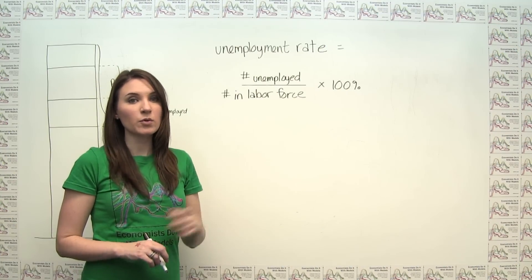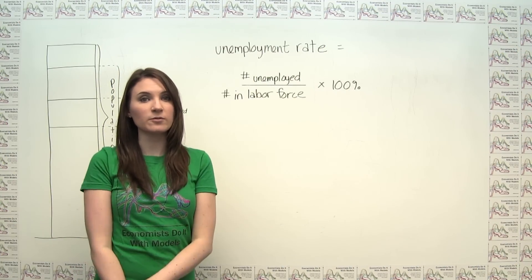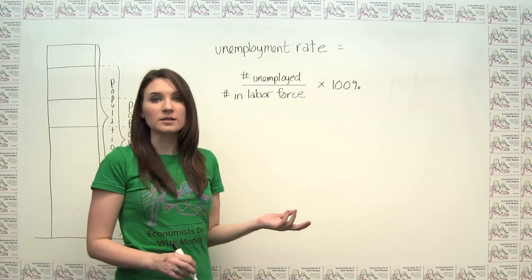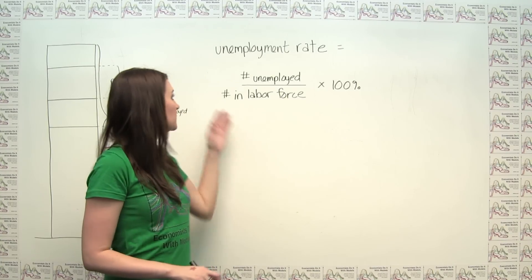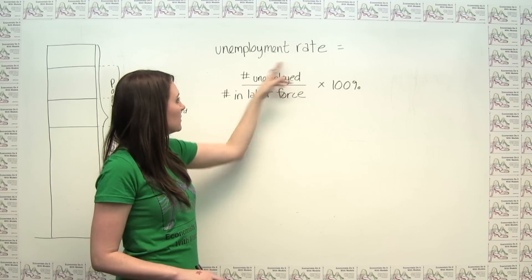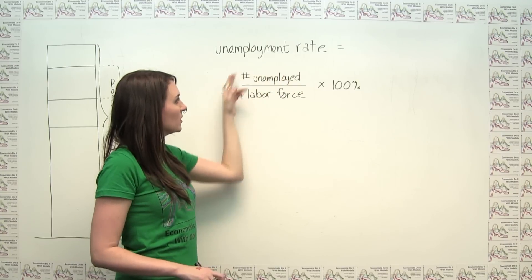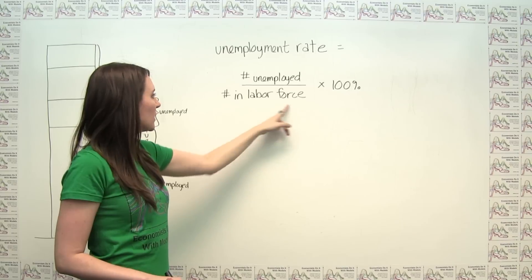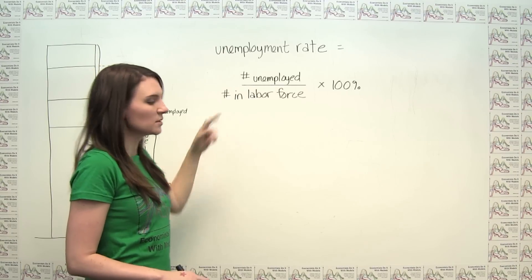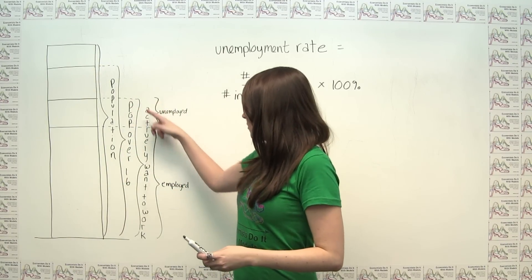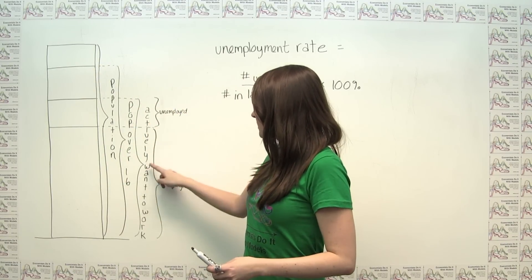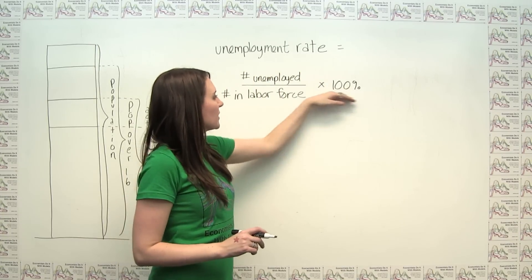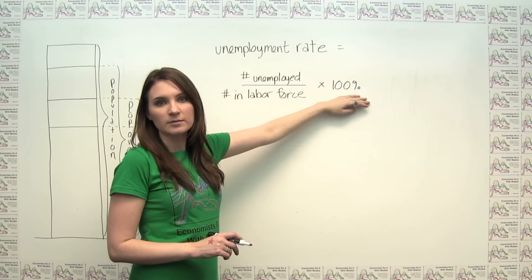The unemployment rate is reported as the percentage of the labor force that is counted as unemployed. Mathematically, the unemployment rate is calculated by taking the number unemployed divided by the number in the labor force — those actively wanting to work — and then multiplying by 100%.